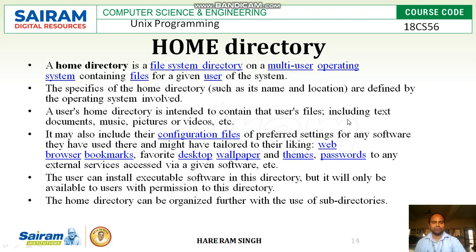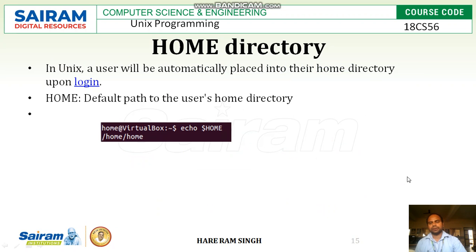A user's home directory is intended to contain that user's files, including text documents, music, pictures, and videos. It may also include configuration files of preferred settings for any software they have used, such as browser bookmarks, desktop wallpaper, theme, and passwords. The user can install executable software in this directory, but it will only be available to users with permission. The home directory can be organized further with the use of subdirectories.